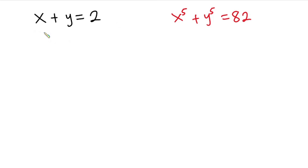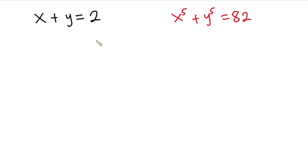Hello everyone. In this video we have this nice problem: x plus y is equal to 2, and x to the fifth power plus y to the fifth power is equal to 82. We have to find the values of x and y which are real.